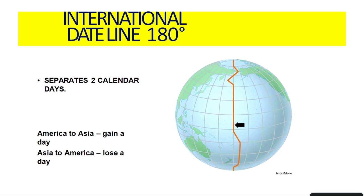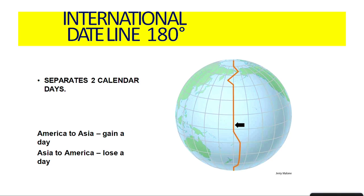The international date line is another imaginary line we must know. It clearly separates the globe into two parts. As you cross this line from west to east — going from Africa to Asia — you will gain one day in time. Whereas if you are going from Asia to America, you will lose one day. So sometimes you are asked whether you can live the same day twice — yes, it is possible, but you will also lose one day coming from America to India.